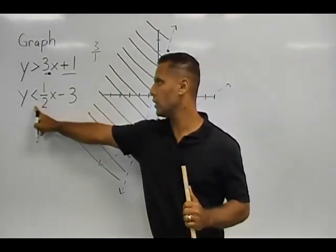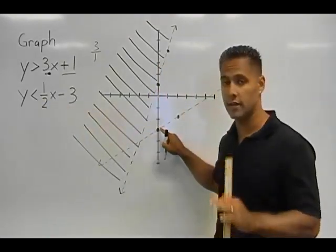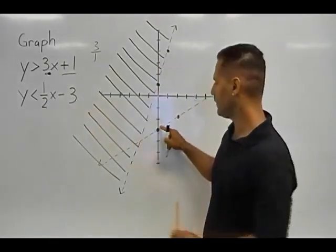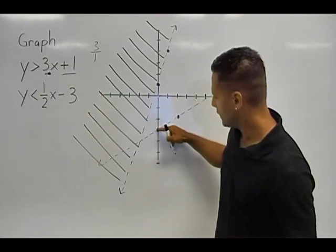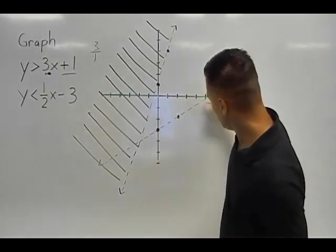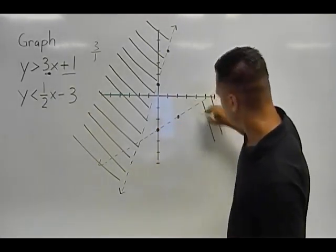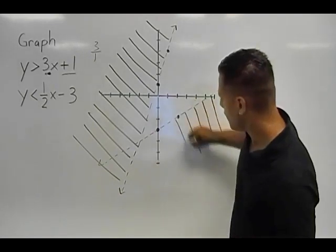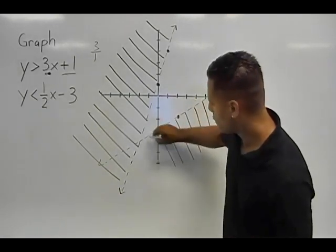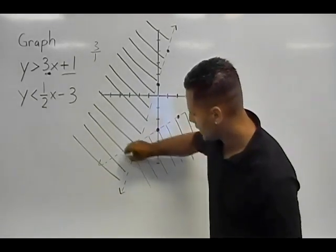And for this inequality here, we're going to find our y-intercept, which was negative 3. And it says y is less than. And y is less than at this point below. So we're going to shade everything below this line. We can plug any point we want on this side of our inequality to make it a true statement.